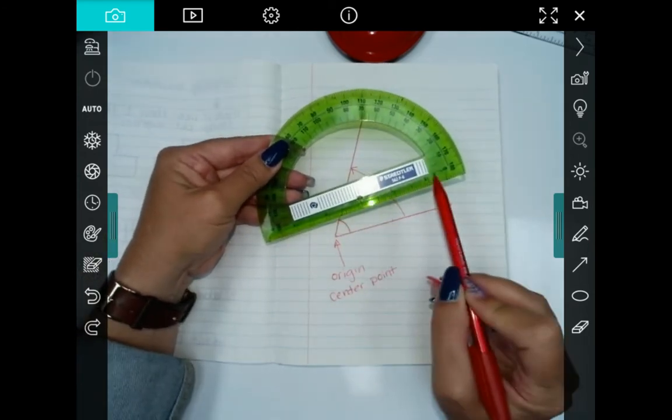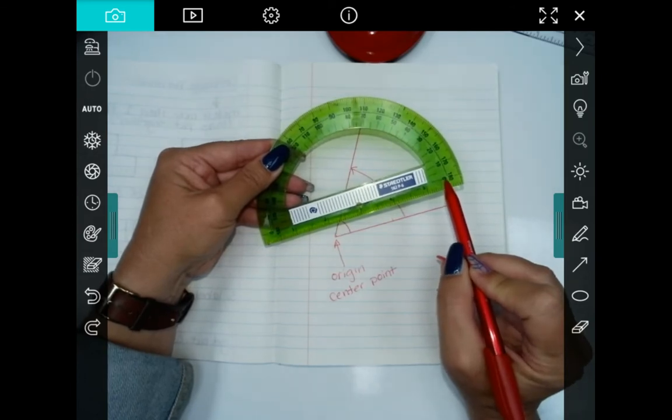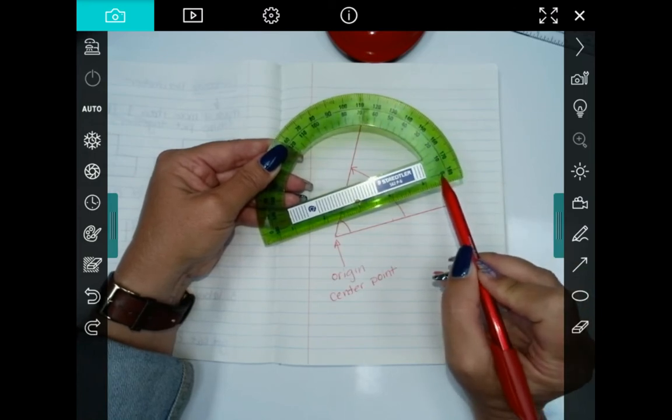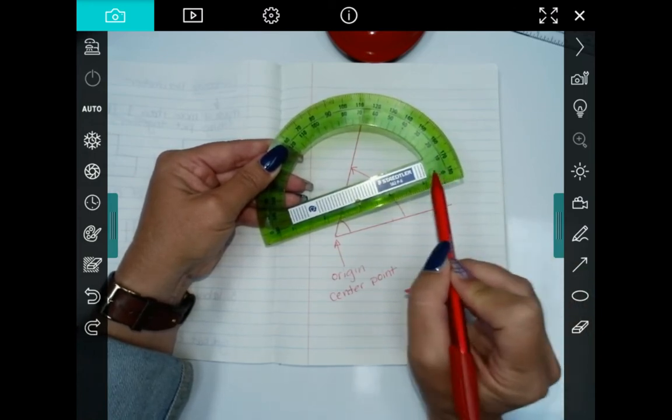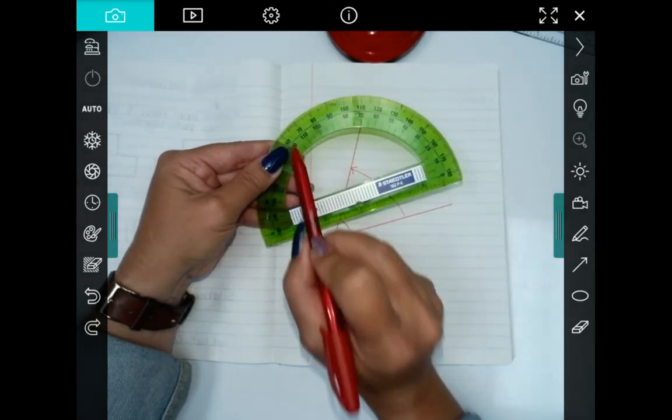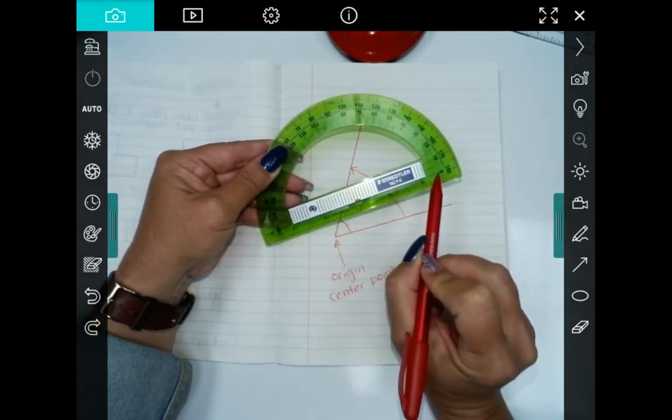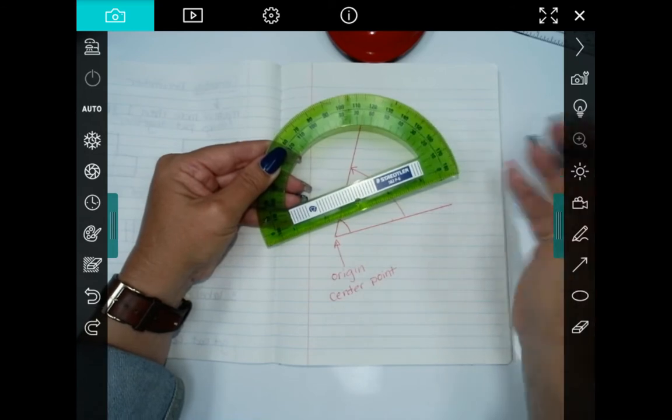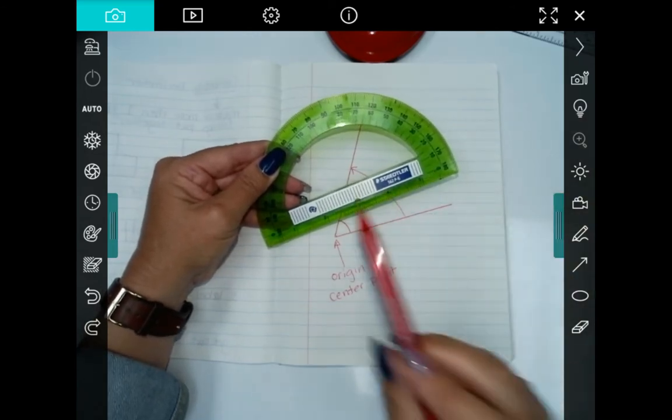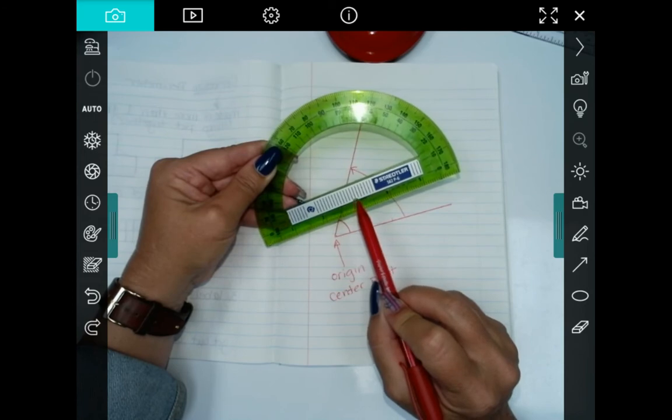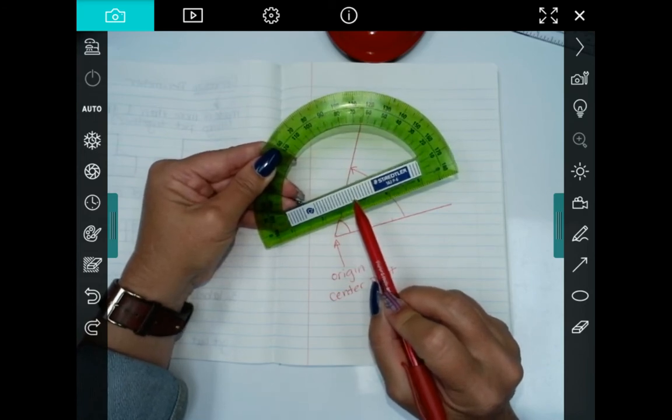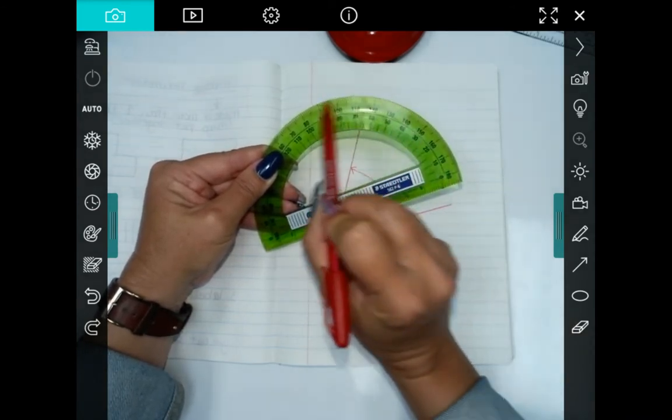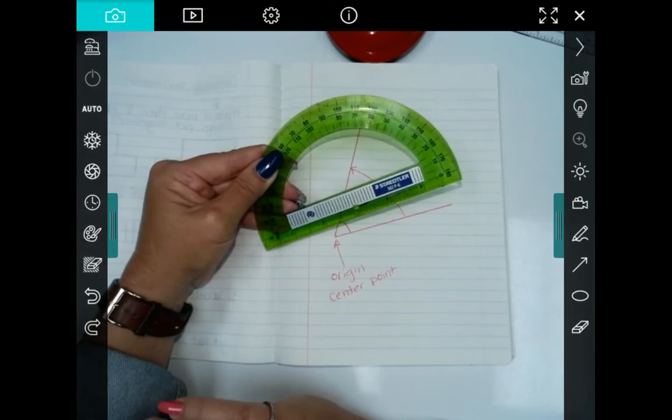So when you're measuring your angle, you always want to make sure sometimes it's going to be from this side. It'll usually be from this side though. You always want to make sure that you use the scale. Okay. So the scale is the numbers. You use the scale that starts with a zero. If you use the 180, it's going to be wrong and you don't want to have the wrong answer. So you need to make sure you have the center point located and you want to know the difference between the inside scale and the outside scale.